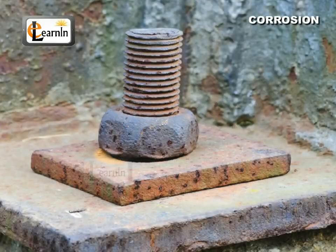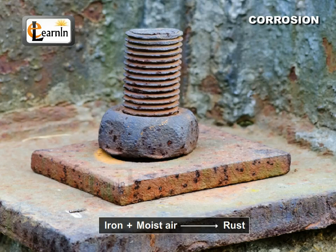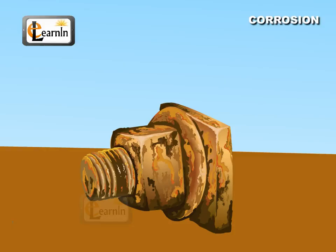Rusting of iron occurs when iron is exposed to moist air for a long time, forming a brown, flaky substance. Now, let's perform an activity to check the conditions in which the rusting of iron takes place.